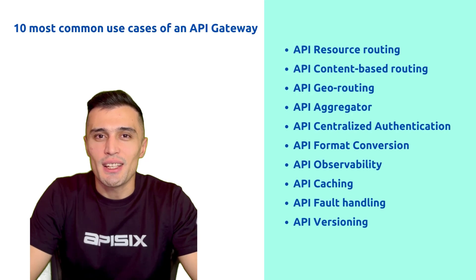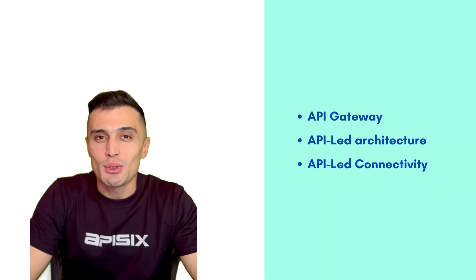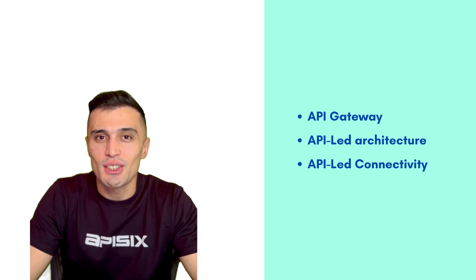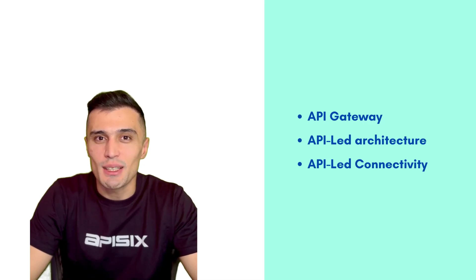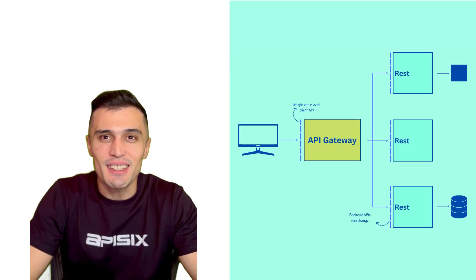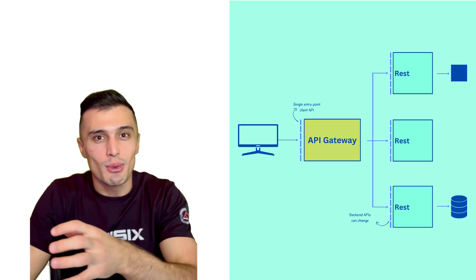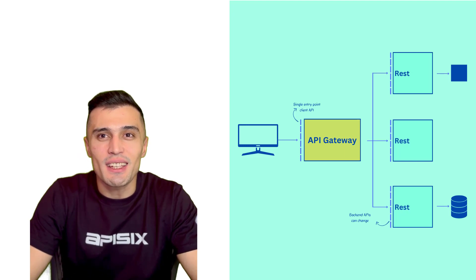Here is a summary of 10 patterns that use API Gateway. Before we go into each of these patterns, let's understand three terms: API Gateway, API-led architecture, and API-led connectivity. API Gateway is a pattern formed by adding a layer between the client and the server that acts as a single entry point, forwarding requests from the client to the server.